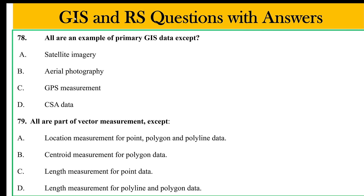Primary GIS data input. The answer is C: satellite imagery, aerial photography, GPS measurement — these are primary data inputs. C. Satellite imagery.